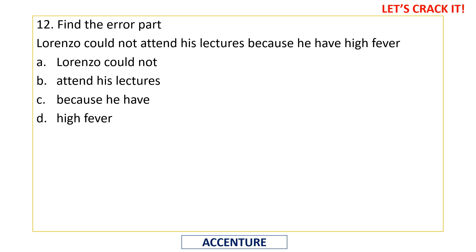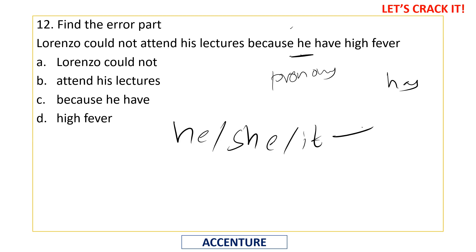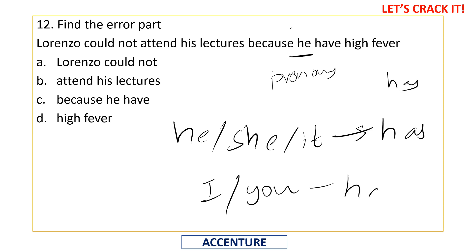Find the error: 'Lorenzo could not attend his lectures because he have high fever.' Even with basic grammar knowledge, the error is clear. 'He' is a third-person singular pronoun — he, she, and it are always followed by 'has,' not 'have.' First person 'I' and second person 'you' use 'have.' So the error is 'he have' — it should be 'he has high fever.'